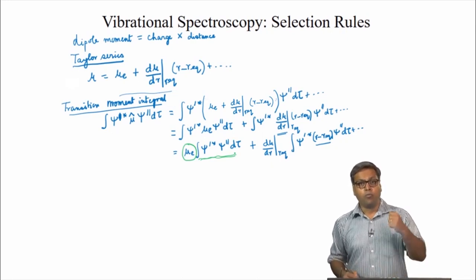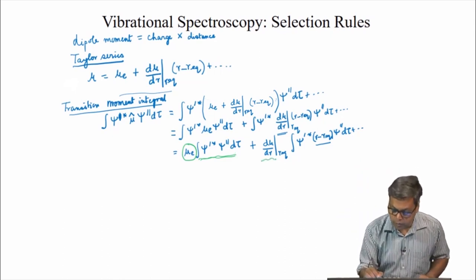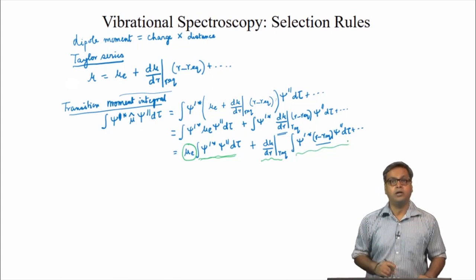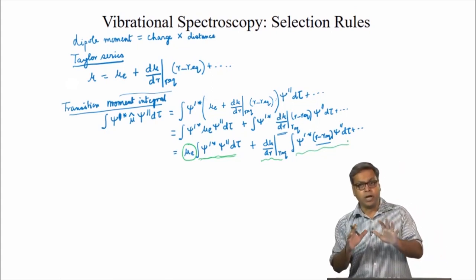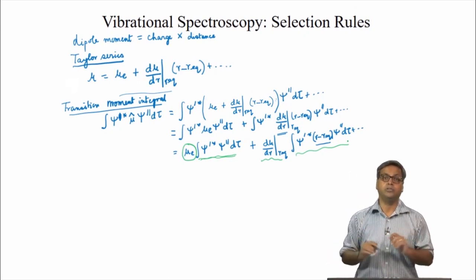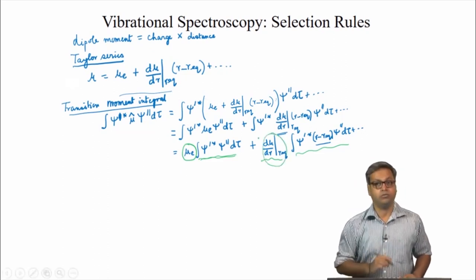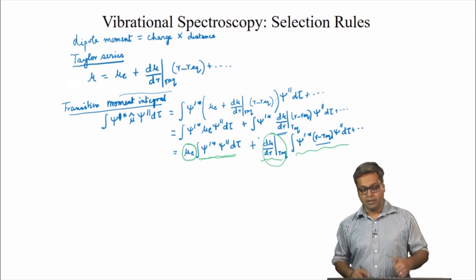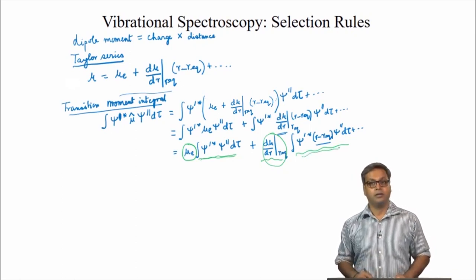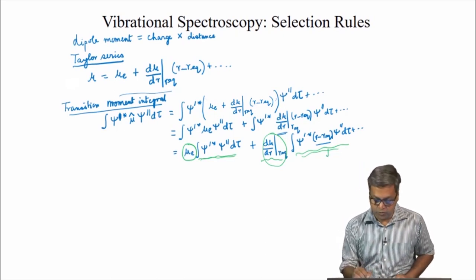If a vibrational transition needs to happen, the second term has to be nonzero. Both parts of the second term must be nonzero: the gradient of the dipole moment with respect to displacement must be nonzero, and the integral must be nonzero. The first part being nonzero is the gross selection rule. Solving the integral should provide us with the specific selection rule, that is ΔV = ±1.